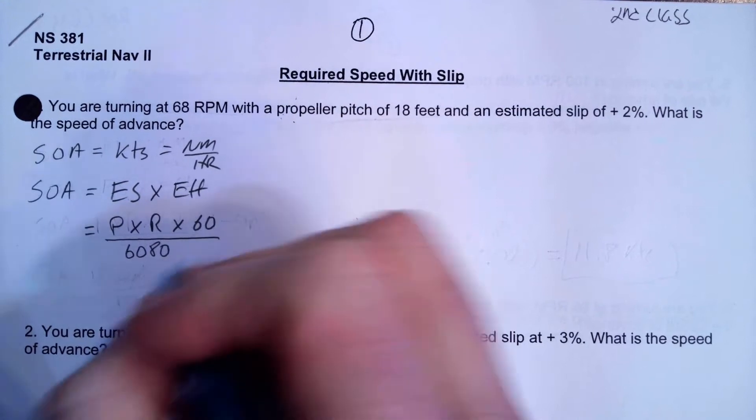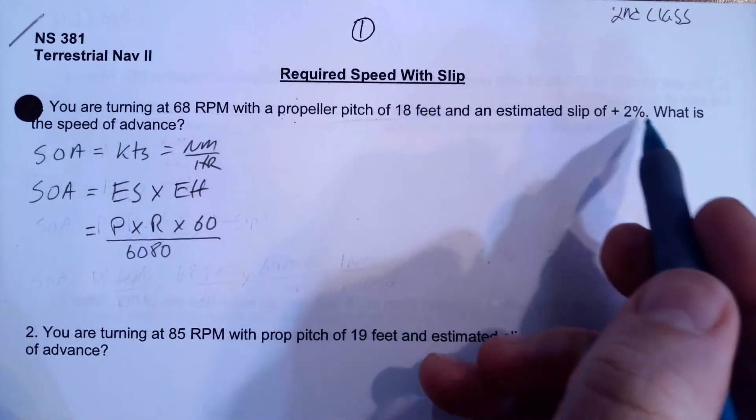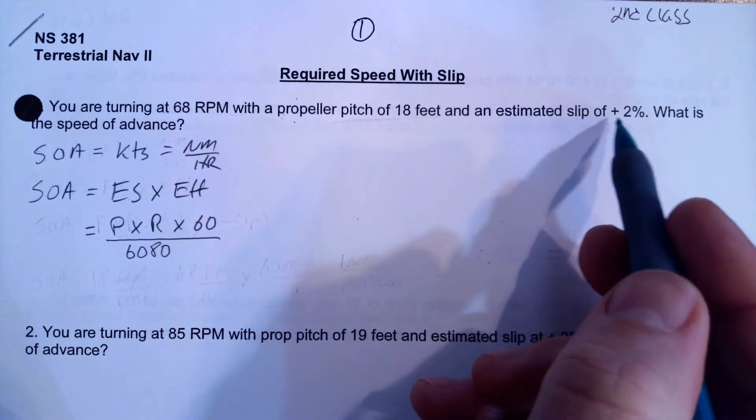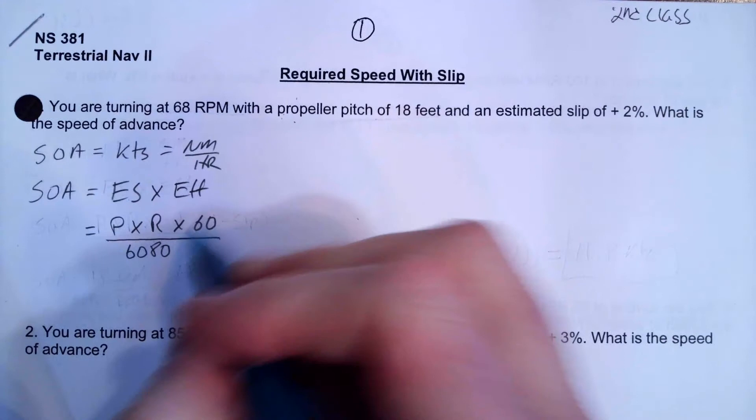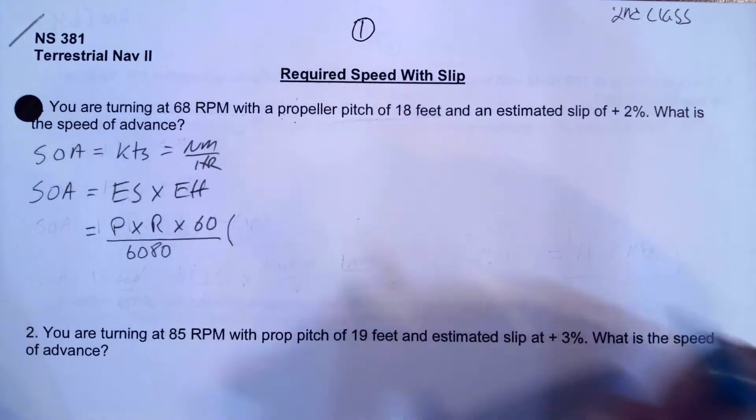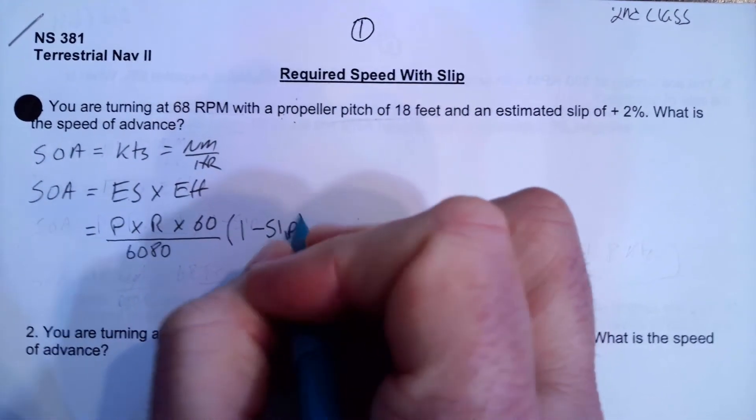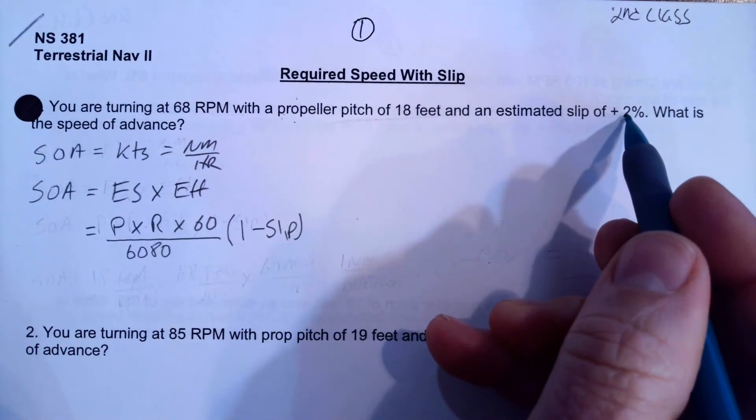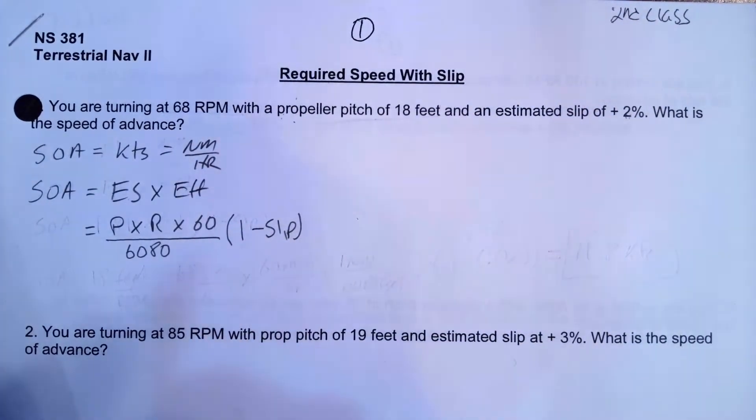And then what we need to do is, that's our theoretical speed based on our RPM and pitch, but now we have to multiply that by our slip. Which takes it from theoretical to the actual, and that's going to be multiplying essentially by the efficiency, and the efficiency is 1 minus the slip. So we're going to have to take that 2%, convert it to a decimal, and subtract it from 1.